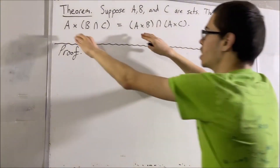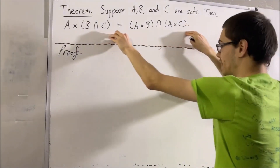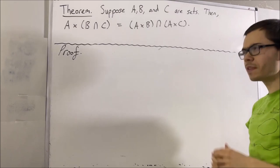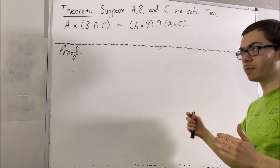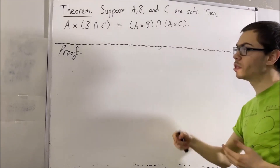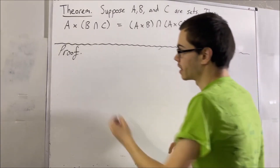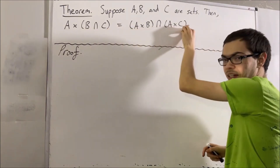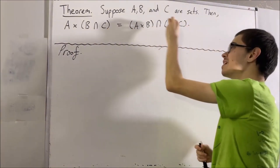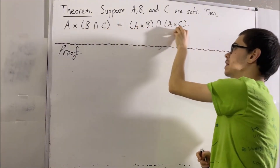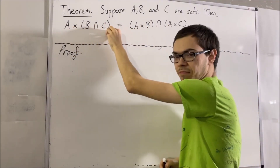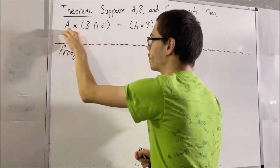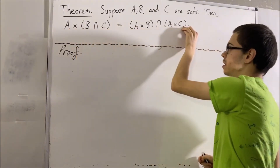We're trying to prove that two sets are equal. And to prove that two sets are equal, what we can do is show that everything in this set is also in this set, and everything in this set is also in this set. Let's start by showing that everything in this set is also in this set.